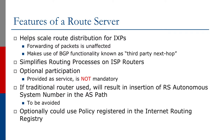The typical features of a route server are these. It helps scale route distribution for Exchange Points. Forwarding of packets is unaffected — traffic does not go through a route server because it makes use of a BGP functionality known as third-party next-hop, which we covered in the BGP attribute introduction. It simplifies the routing processes on ISP routers. Participation is optional — it's provided by the Exchange Point as a service to members.